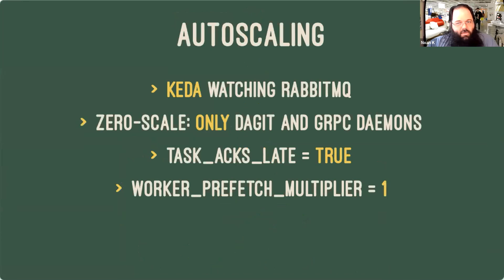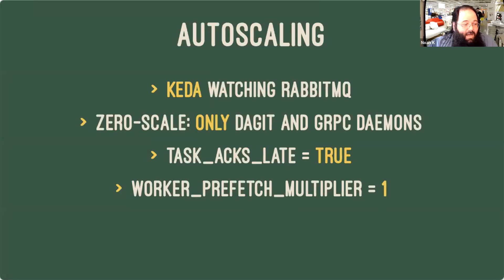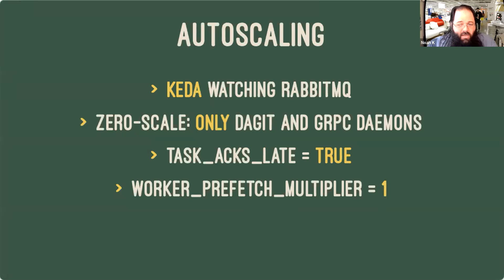One of our big goals was being able to scale our system down when not in use. Dagster delivers that nicely. The minimum system state is just Dagster and one copy of the gRPC daemon for each workspace running — that uses very few resources, almost no CPU and just a little bit of RAM. Because everything is decoupled via RabbitMQ, we use a tool called KEDA to watch the queue depth in RabbitMQ and drive our auto-scaling. We've updated some stuff in KEDA 2.1 with a bunch of new features to make this use case work better.